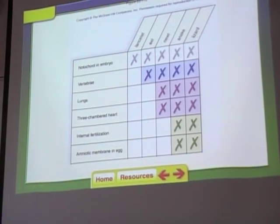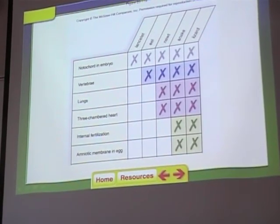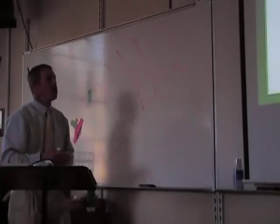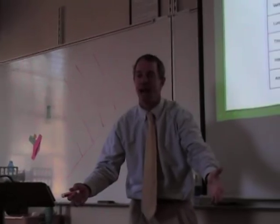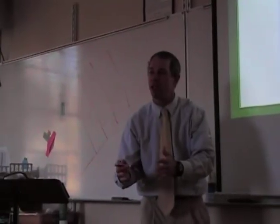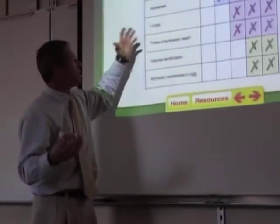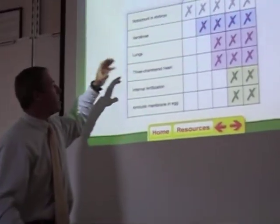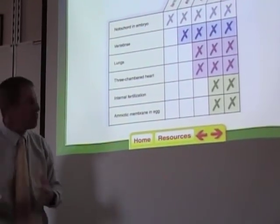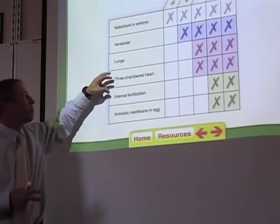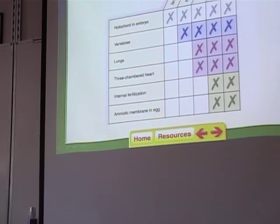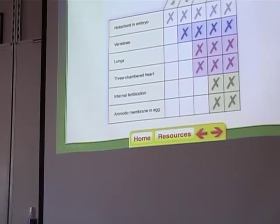During evolution, each of these characters came about at some point in the history of organisms through a mutation — a mutation that caused lungs to come about, a mutation that caused vertebrae to come about, something that caused the three-chambered heart to evolve. What we want to see is which of these characters came first.